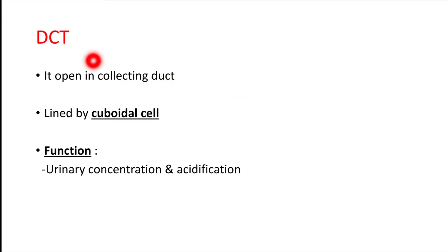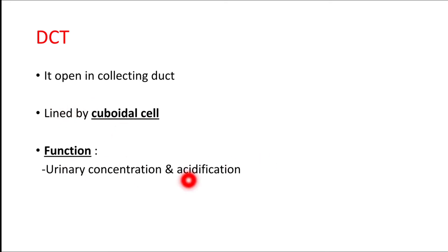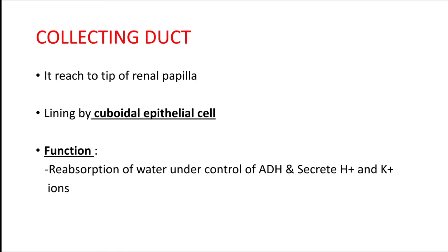The loop of Henle opens into the distal convoluted tubule, which is again lined by cuboidal epithelial cells. Its function is to concentrate the urine by reabsorption of electrolytes and water, thereby acidifying the urine.